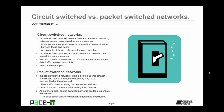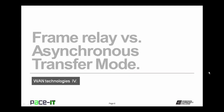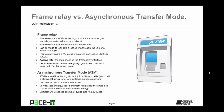Now let's talk about the differences between frame relay and asynchronous transfer mode. Frame relay is a WAN technology in which variable-length packets are switched across the network. Frame relay is less expensive than leased lines, but can be made to look like a leased line through virtual circuits, or VCs. A frame relay network will track a VC using a data link connection identifier to identify the ends of the VC. Two important terms: access rate — the maximum speed of the frame relay interface — and committed information rate, or CIR, which is the guaranteed minimum bandwidth a customer receives.